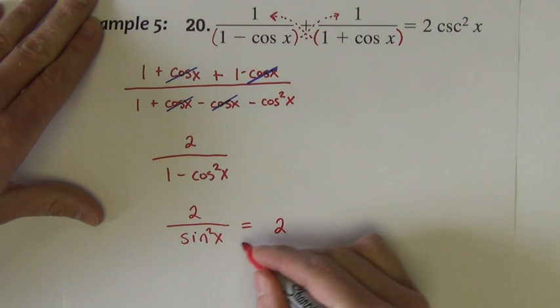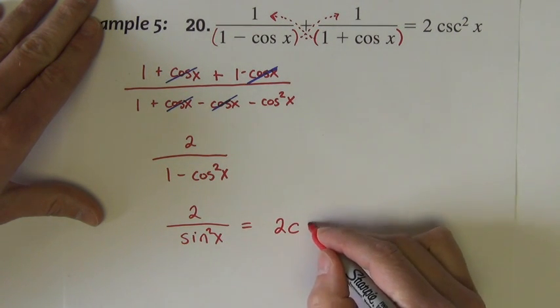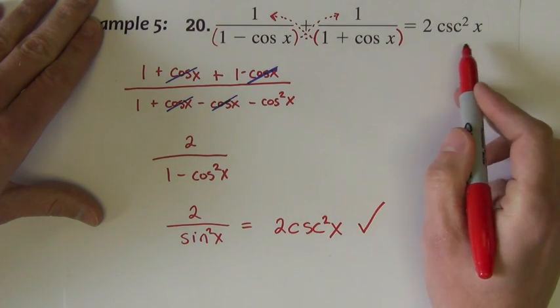This is the same as 2, and we bring this up as its reciprocal, 2 cosecant squared x. That's what we're trying to prove.